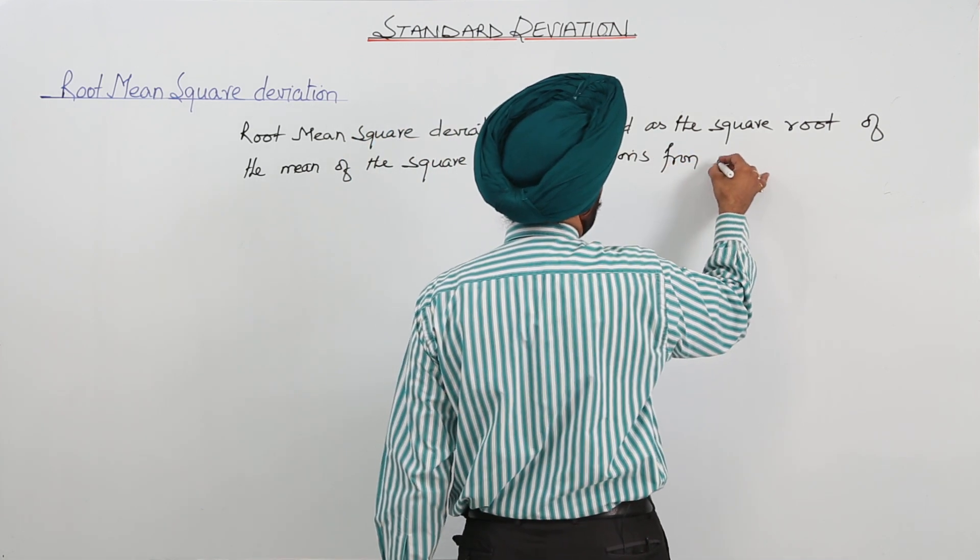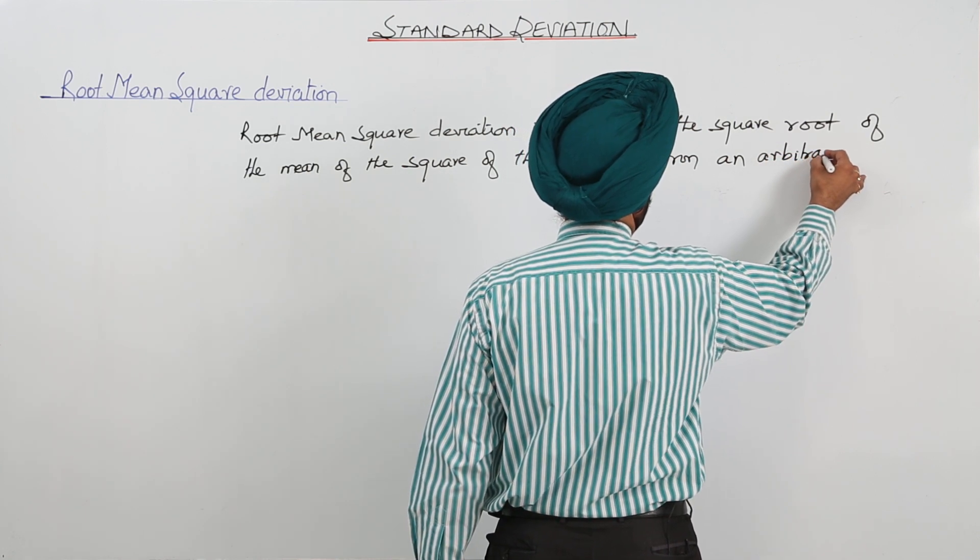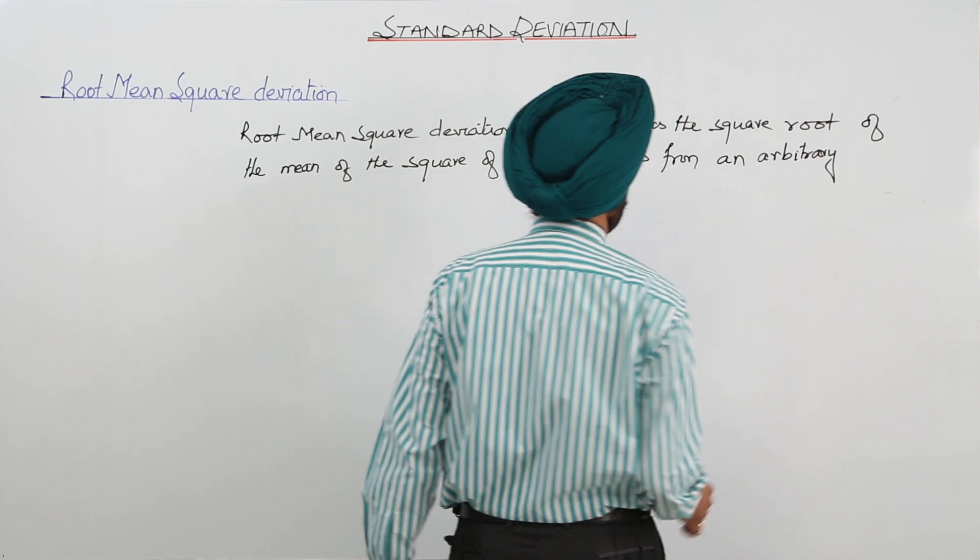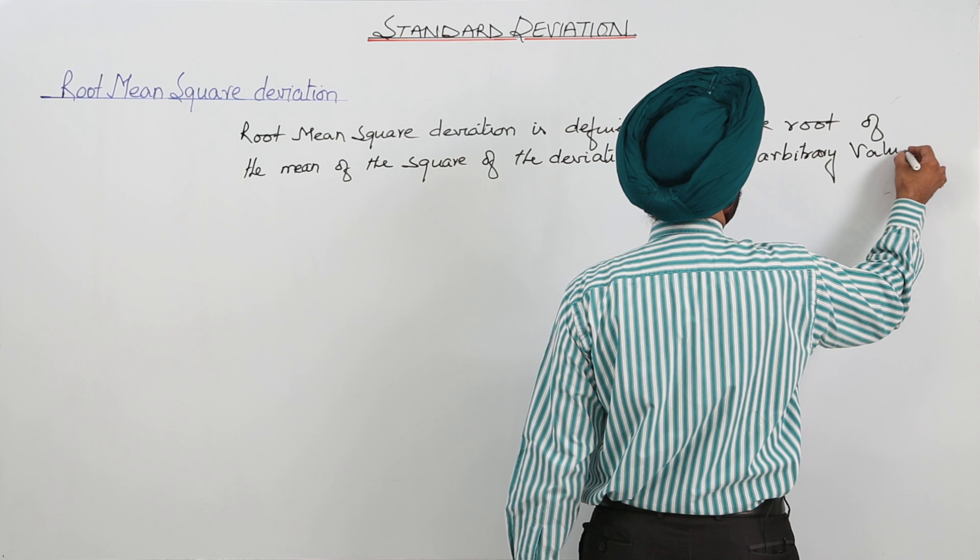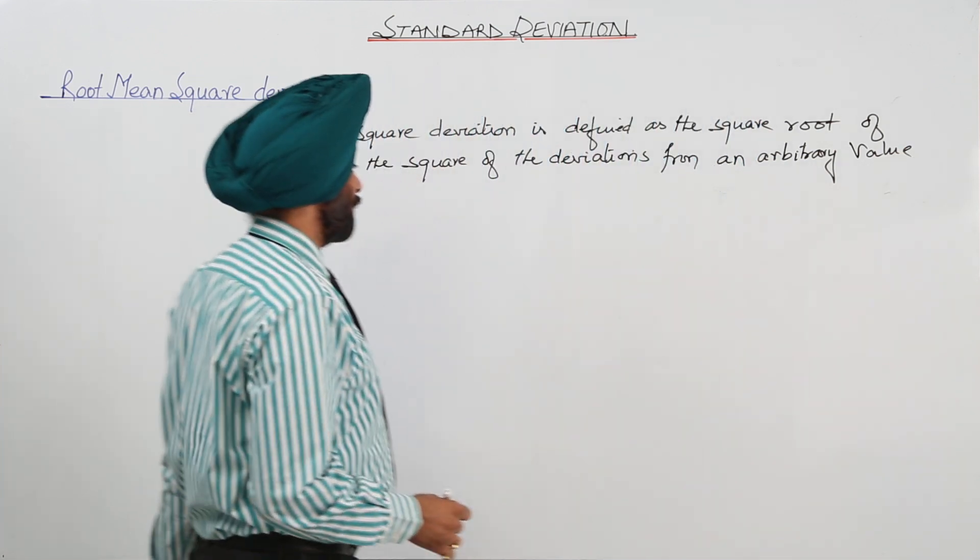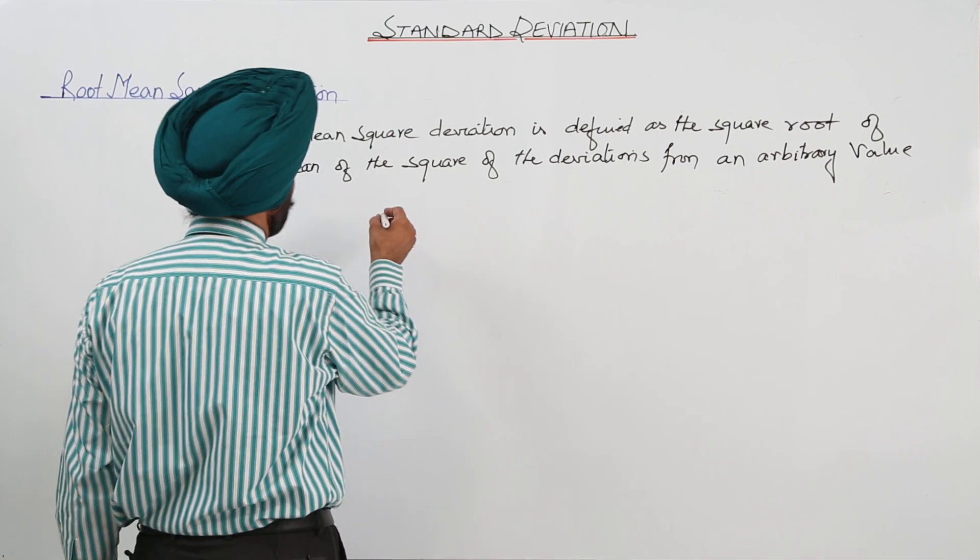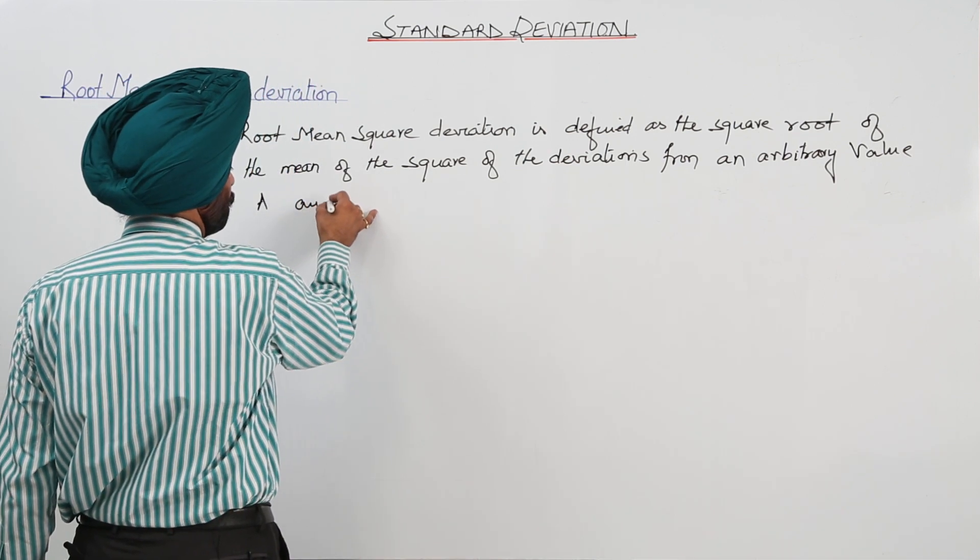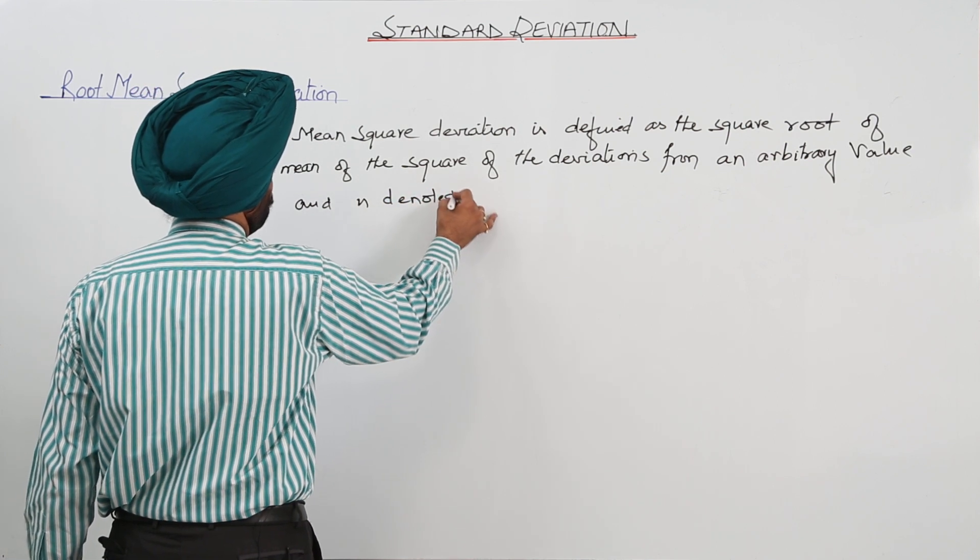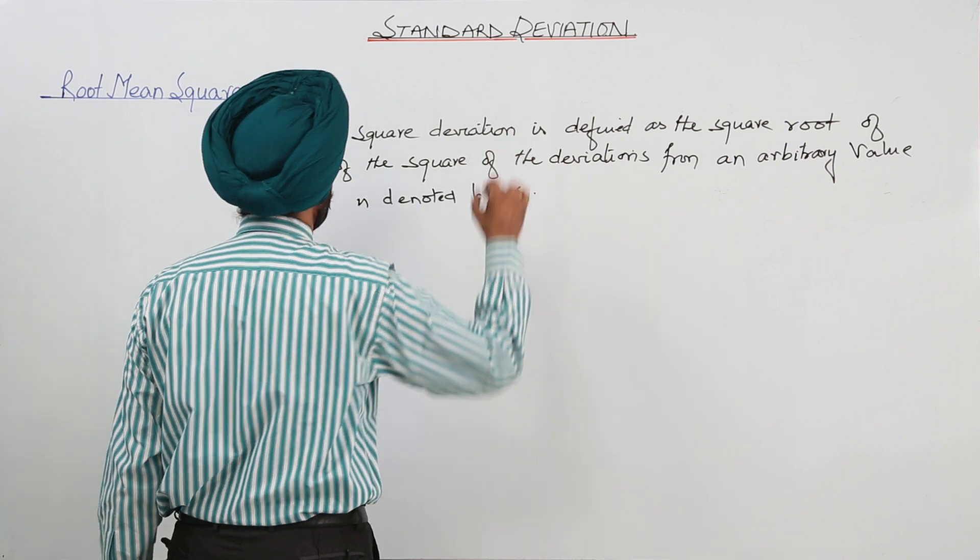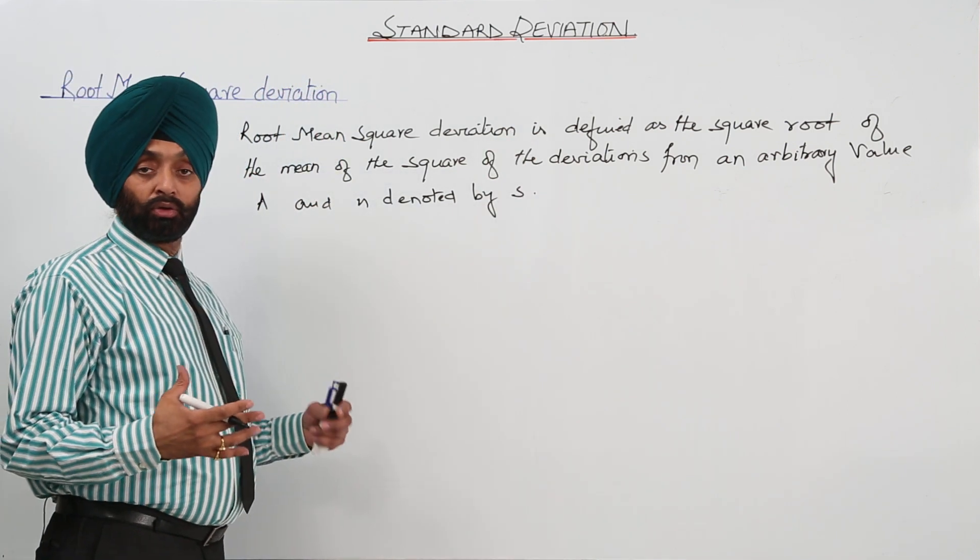Root mean squared deviation from an arbitrary value, and we will be writing it as a capital A. From an arbitrary value capital A, and is denoted by small s. You can write like this. So, this is the root mean squared value.